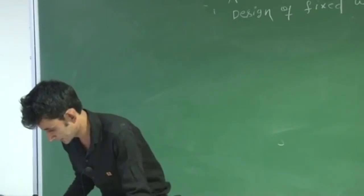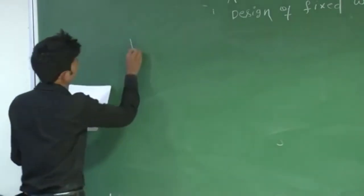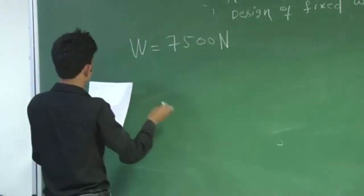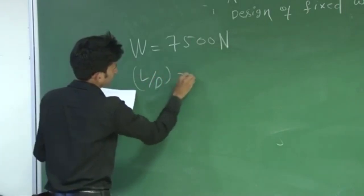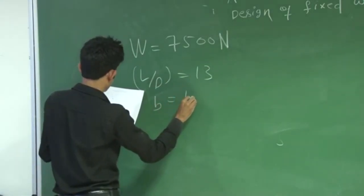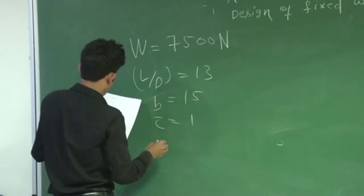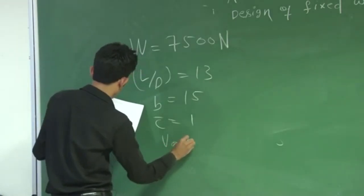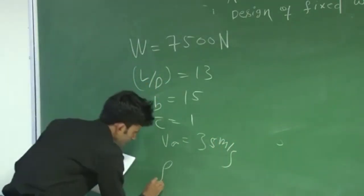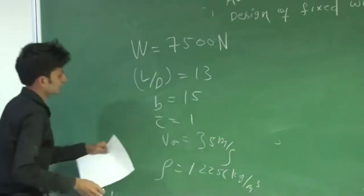This is a very straightforward answer. The weight is already given in Newton. L/D is given as 13, B is given as 15, C-bar is given as 1, and V-infinity is given as 35 meter per second. At mean sea level, rho will be 1.2256, and the wing can be taken as rectangular.